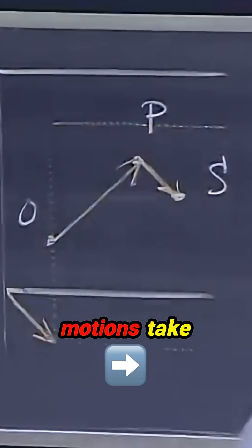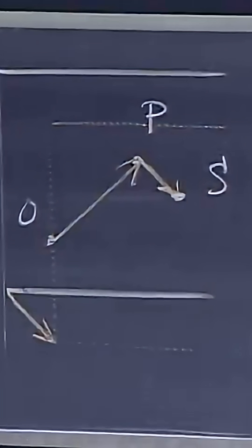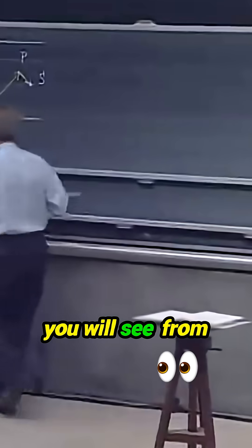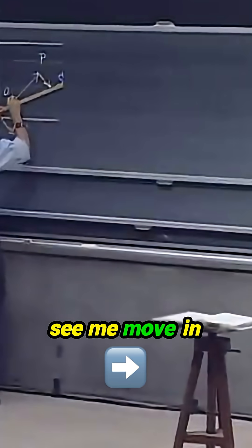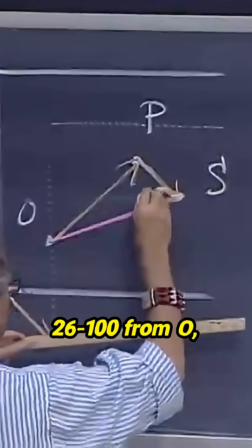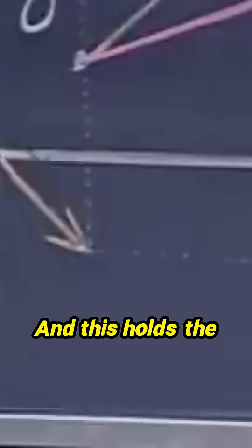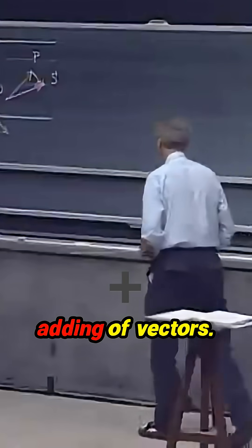Now, if these two motions take place simultaneously, then what you will see from where you're sitting, you will see me move in 26-100 from O in a straight line to S, and this holds the secret behind the adding of vectors.